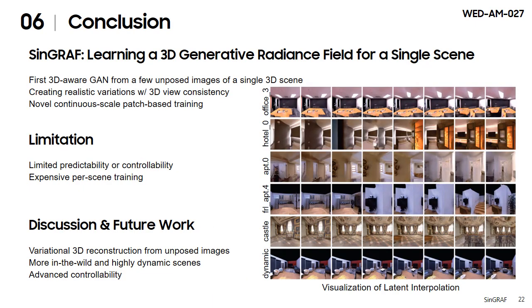In conclusion, we introduce Scene Graph, the first 3D-aware GAN trained from a few unposed images of a single 3D scene, enabling high-quality and realistic variations with 3D view consistency, derived from our novel continuous-scale patch-based training. Although Scene Graph has limited predictability or controllability for generative scenes, it has potential for variational reconstruction, in-the-wild, and dynamic scenes with advanced controllability. We believe that Scene Graph is an important starting point for this future research.